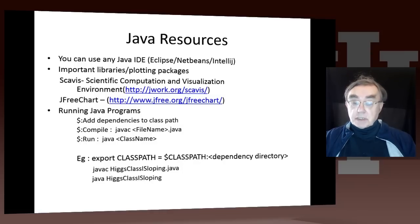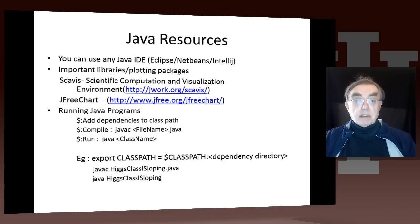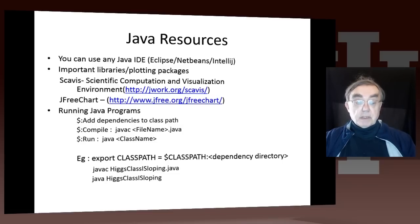To run Java programs, you can do it on your local machine using classical methods. The Java code is available through the files tab on the class web page. You set up your class path, compile it, and then run it. Here's an example for the file available for this particular unit, which is higgs-class1-sloping.java — you just compile it and then run it.